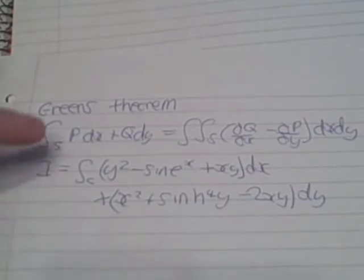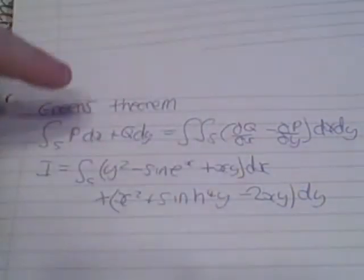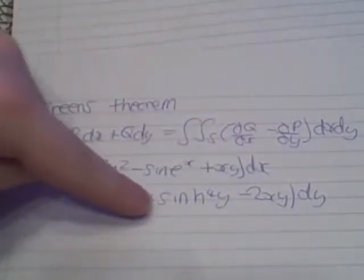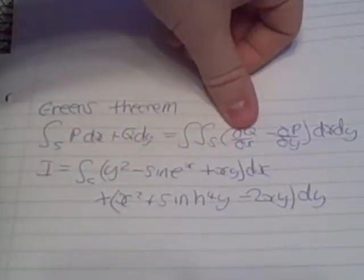Now, as we've set up here, we have our p, which is this part here, our dx, our q, and our dy. So what we have to do is work out dq dx. So if we differentiate this with respect to x, we get 2x.